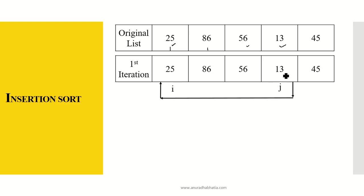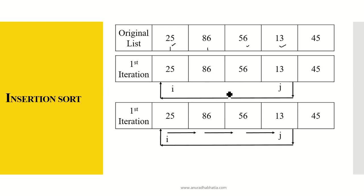25 and 13 — yes, 25 is greater than 13, so 13 needs to take the place of 25. But using insertion sort we do not swap elements directly. What we need to do is: 13 moves to the location of 25, 56 moves to the location of 13, 86 to the position of 56, and 25 to the location of 86.